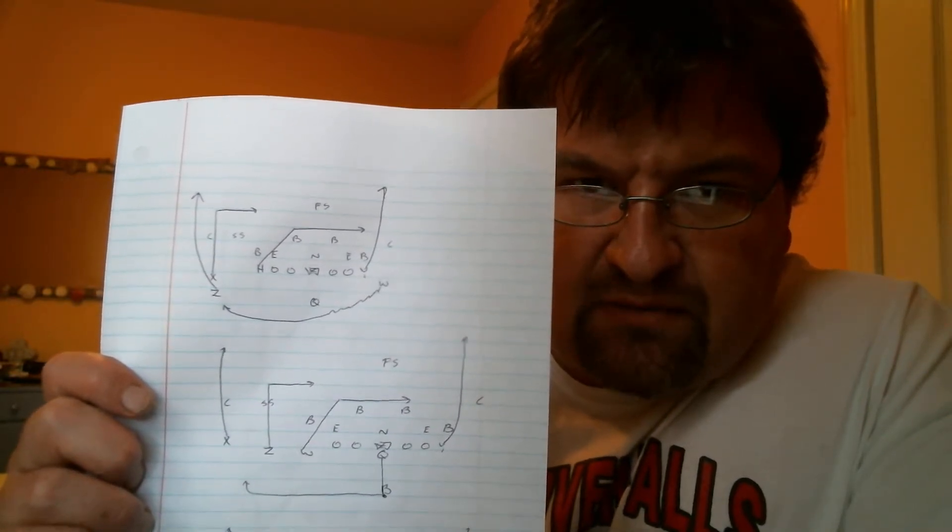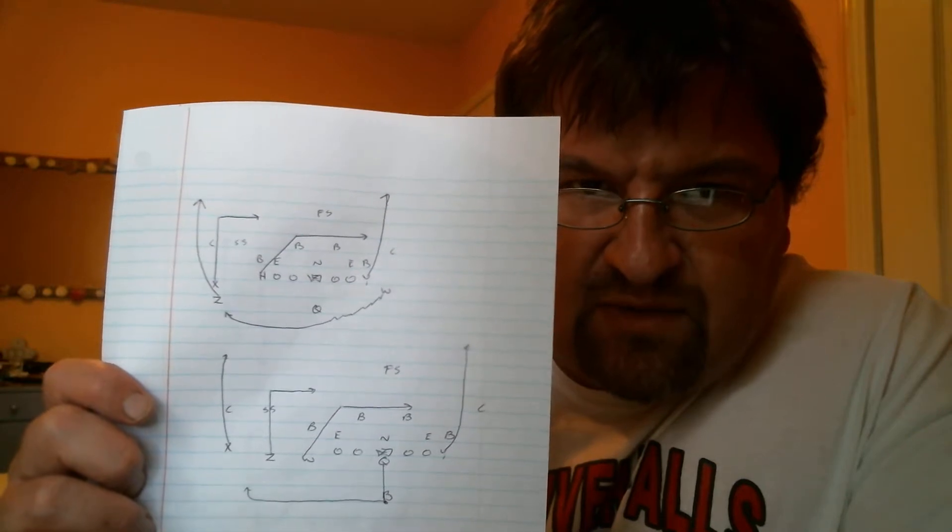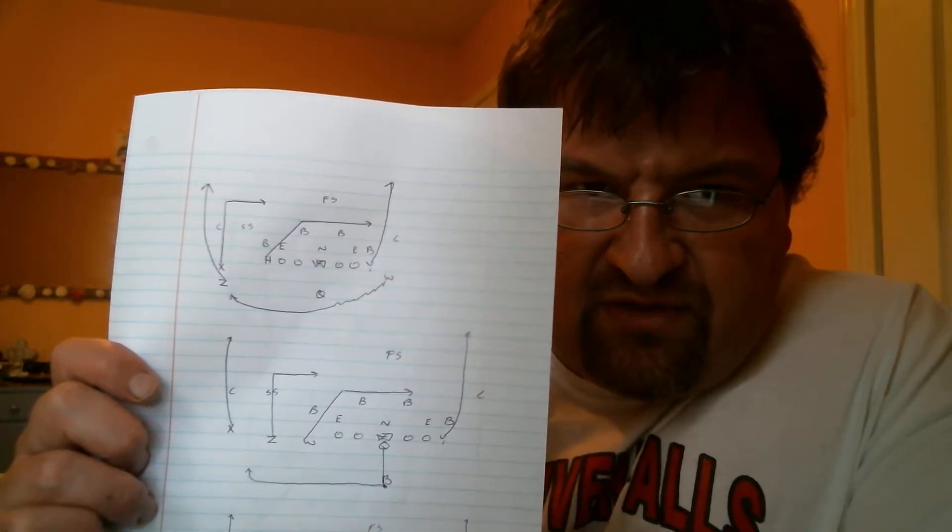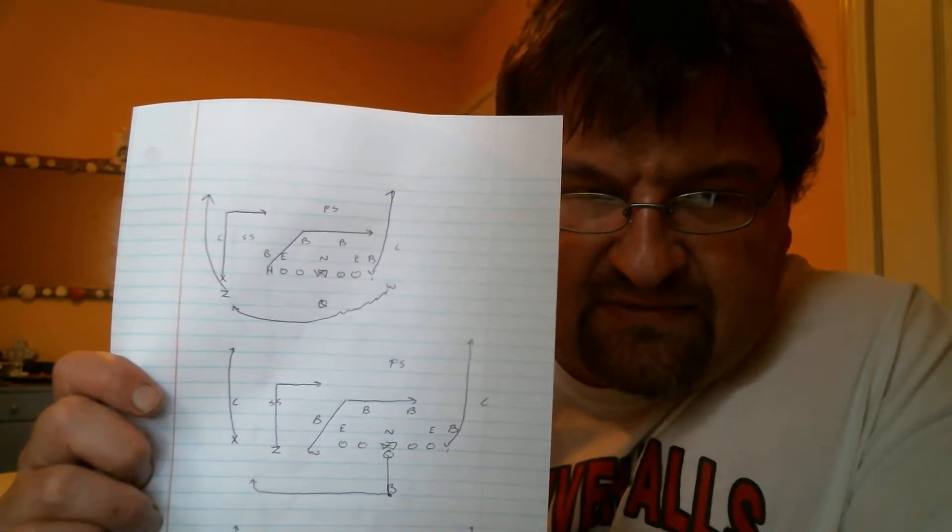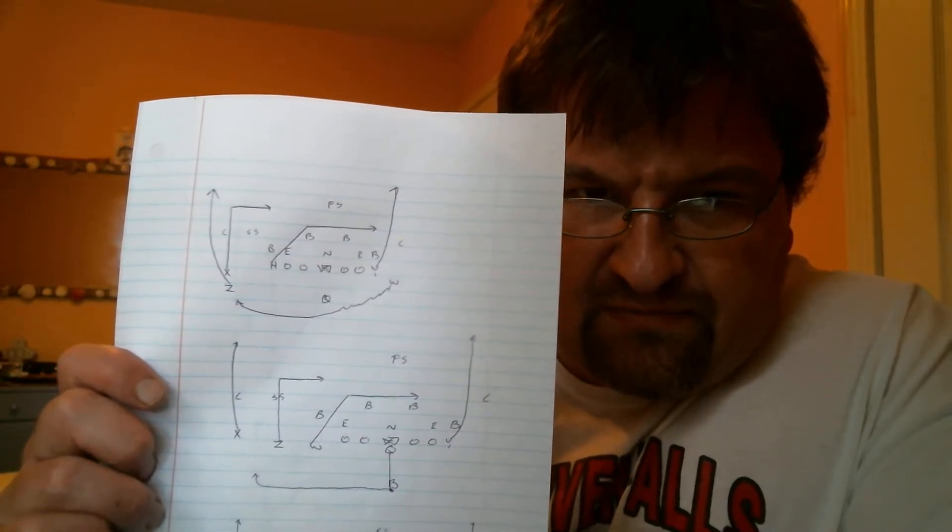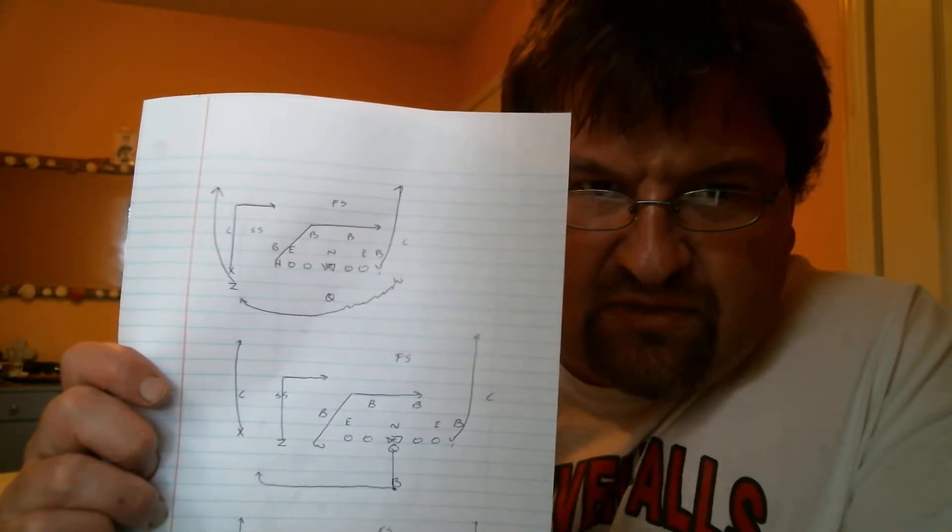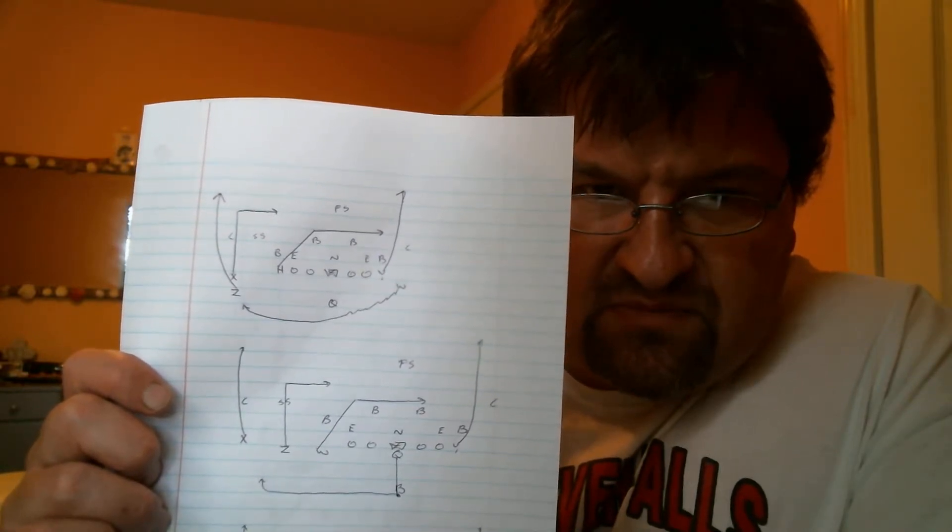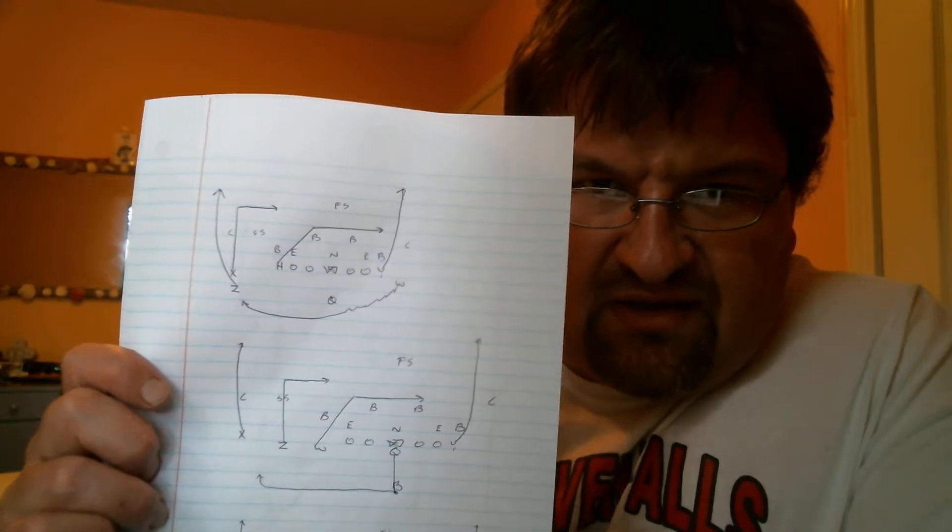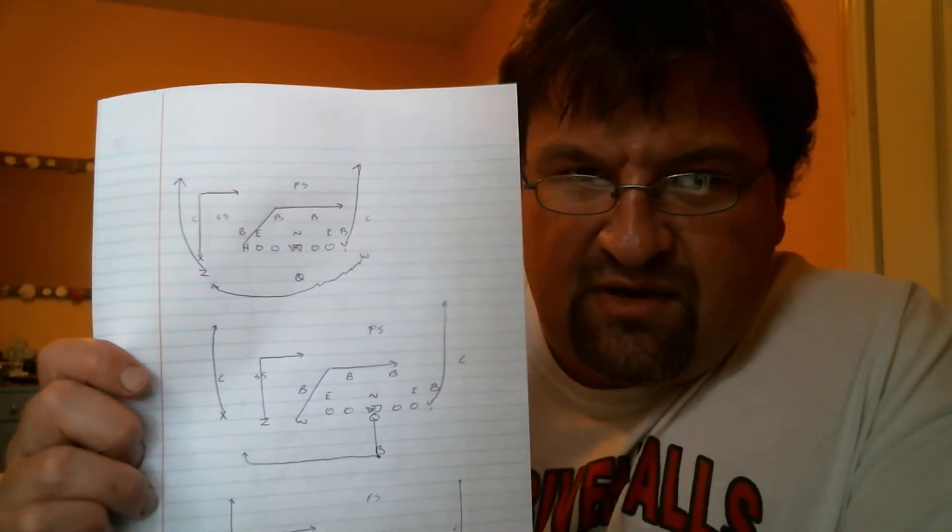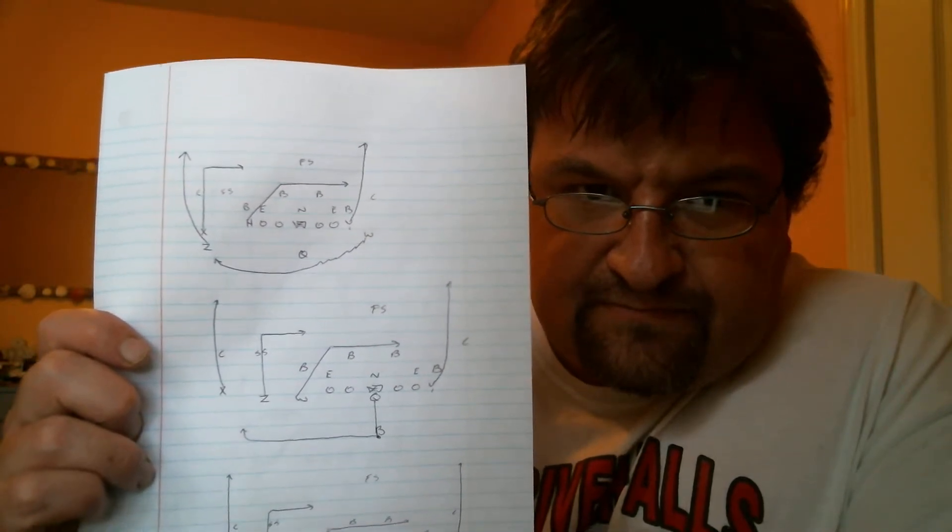Now the wingback, he's going to come in motion and he's going to be setting up for a deep swing pass. As you see here, he's going to be following Z's rotation on the wheel. It's basically an endless loop, is what I call it. I'll call it the merry-go-round concept.